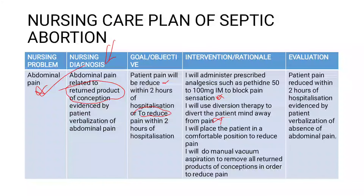Apart from that, you can use diversion therapy to divert the patient's mind away from concentrating on pain. You can talk about placing the patient in a comfortable position which helps reduce pain. Also, doing MVA to remove retained products of conception to promote healing and reduce pain. In terms of evaluation, you can say patient's pain reduced within two hours of hospitalization, evidenced by patient's verbalization of absence of pain.